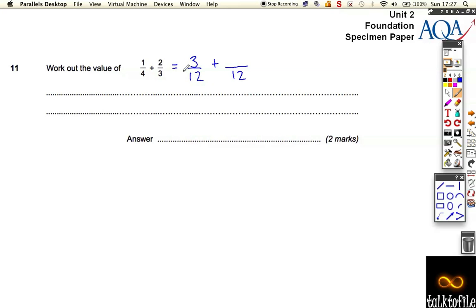This second fraction, how did I get it from the bottom number 3 to the bottom number 12? Well I had to times it by 4, which means I had to times the top number by 4 as well. So 2 times 4 is 8. Again, this 8 out of 12 is the same as 2 thirds, we've just made it look the same as the other fraction.